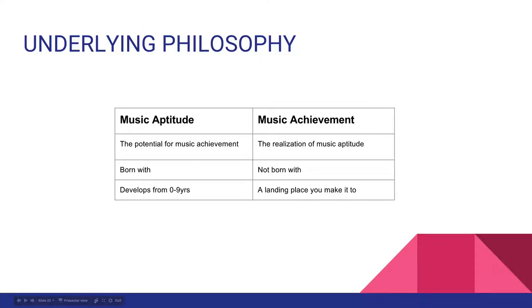You are supposedly born with music aptitude — something you have the potential of. Music achievement is sort of the landing point where you can evaluate how much music aptitude you used. Music aptitude develops from zero to nine years of age. Music achievement is a landing place that you eventually make it to.